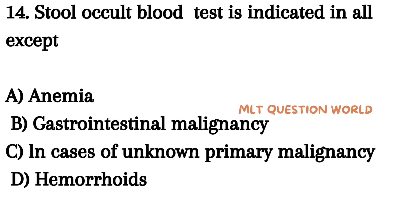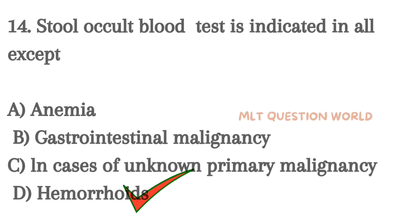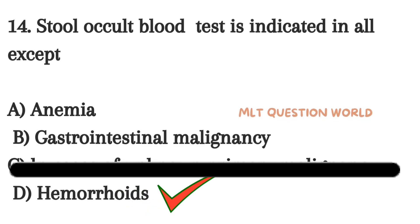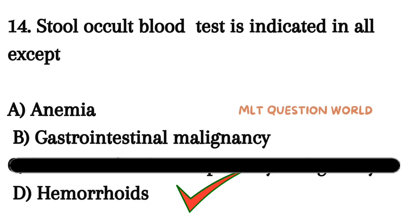Question 14. Stool occult blood test is indicated in all except: Option A. Anemia, Option B. Gastrointestinal malignancy, Option C. In case of unknown primary malignancy, Option D. In hemorrhoids. The right answer is Option C — in case of unknown primary malignancy.